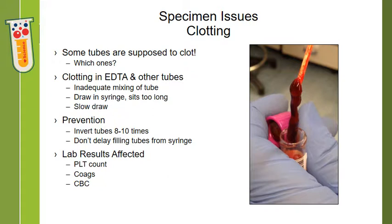Some blood collection tubes are made to allow the blood to clot so that when spun down, we get serum — this would include your gold tops, red tops, tiger tops, and so on. However, a lot of our tubes have additives meant to prevent clotting. Your EDTA tubes, your purple tops, are one of the most common tubes containing an additive to prevent clotting, but sometimes clots still happen. This can be the result of inadequate mixing of the tube after it's drawn, blood being drawn in a syringe and sitting too long before being transferred into a tube, or if it's a slow or difficult draw.